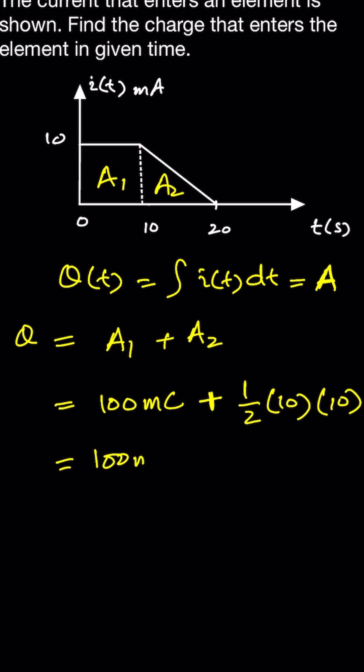So this is 100 millicoulombs plus this - this is 10 into 10, 100 divided by 2, 50 millicoulombs.